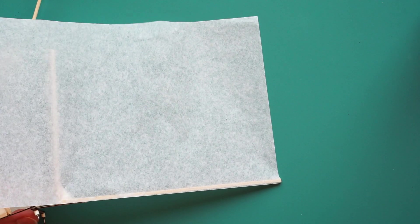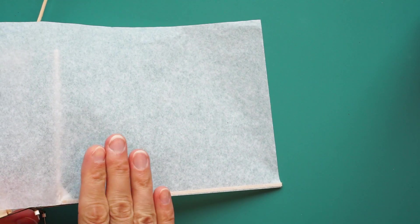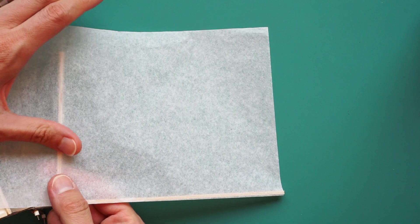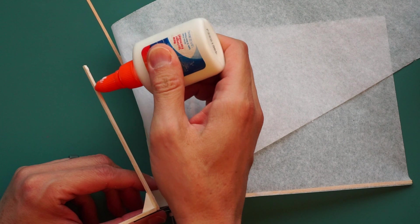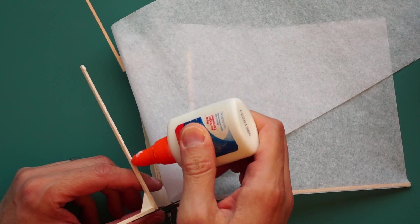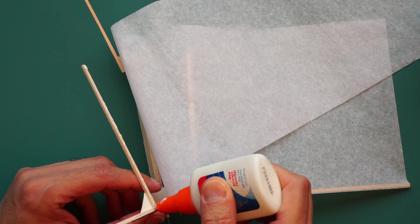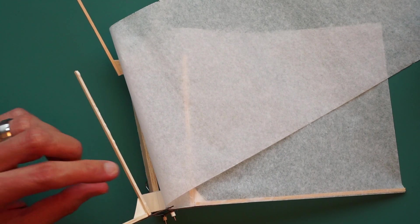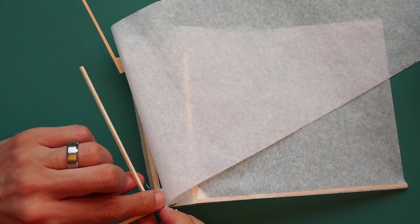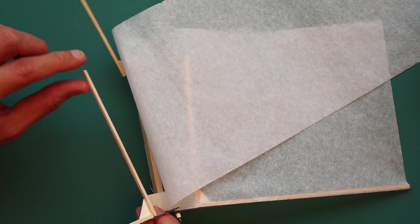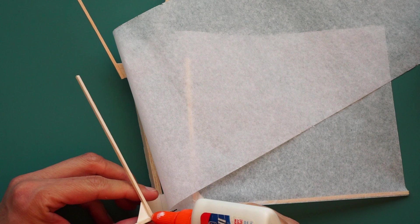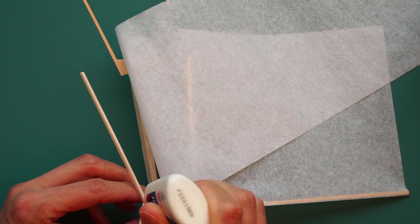You don't want tension on the wing tissue but you don't want it slack either. Let's put a little extra glue here.